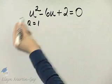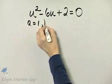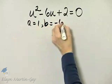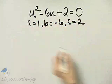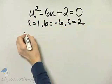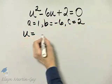A is 1, the coefficient of u squared, b is negative 6, and c is 2. And don't forget the quadratic formula. We are solving for u.